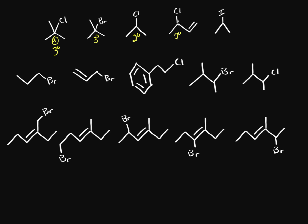Here we'd also get a secondary cation, but it's next to a double bond. So this pi bond can come over and resonate — this is an allylic cation. And then this one is just a secondary cation as well. So the most stable is the allylic one because of resonance, making it number one.